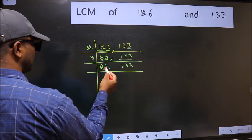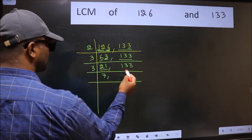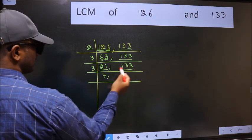Now here 21. 3 times 7 is 21. The other number 133 is divisible by 7.